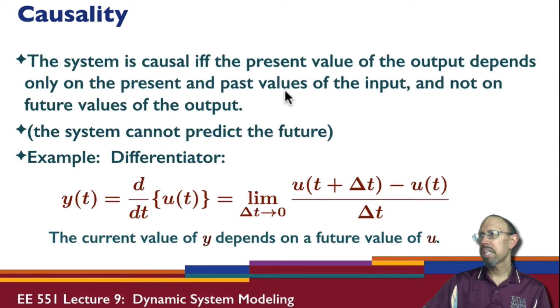It can depend on past values and present values but not on future values of the input. In other words, the system cannot predict the future.